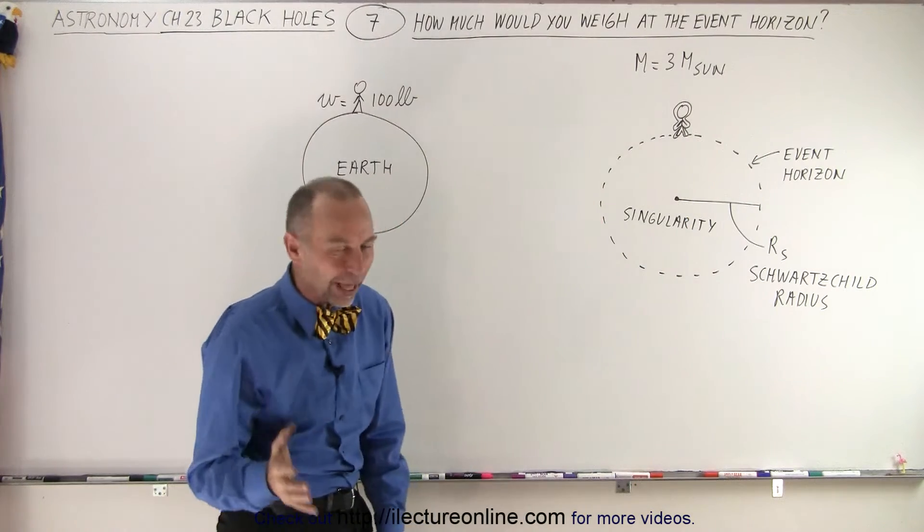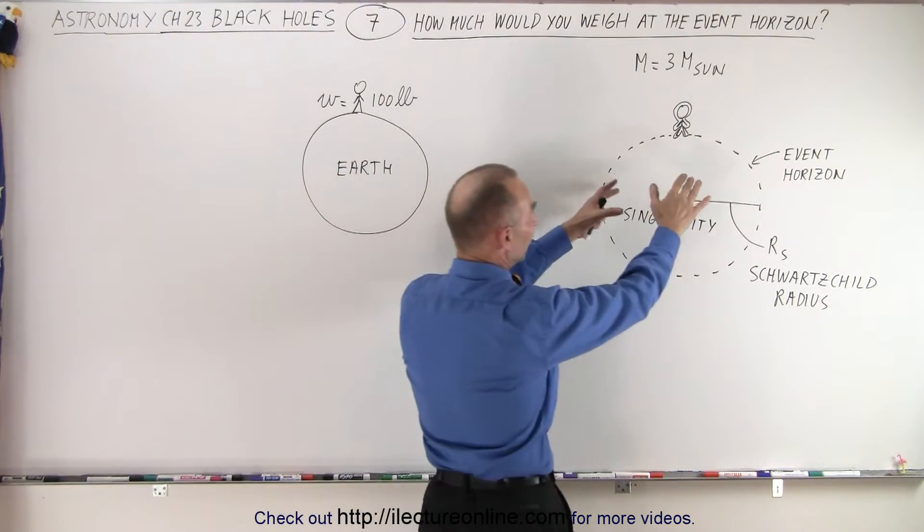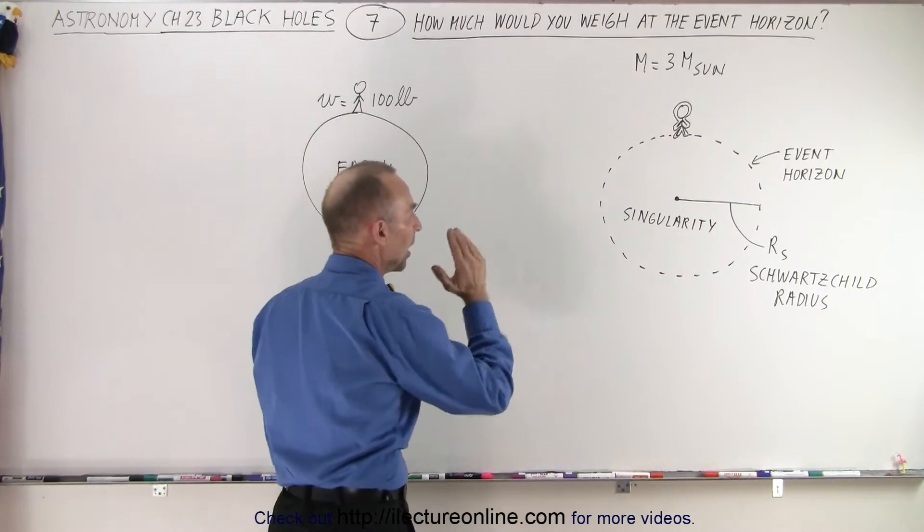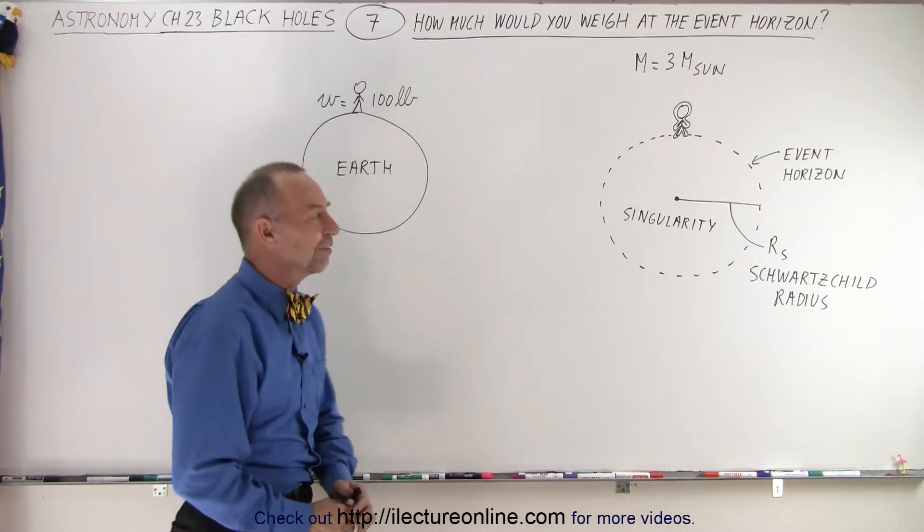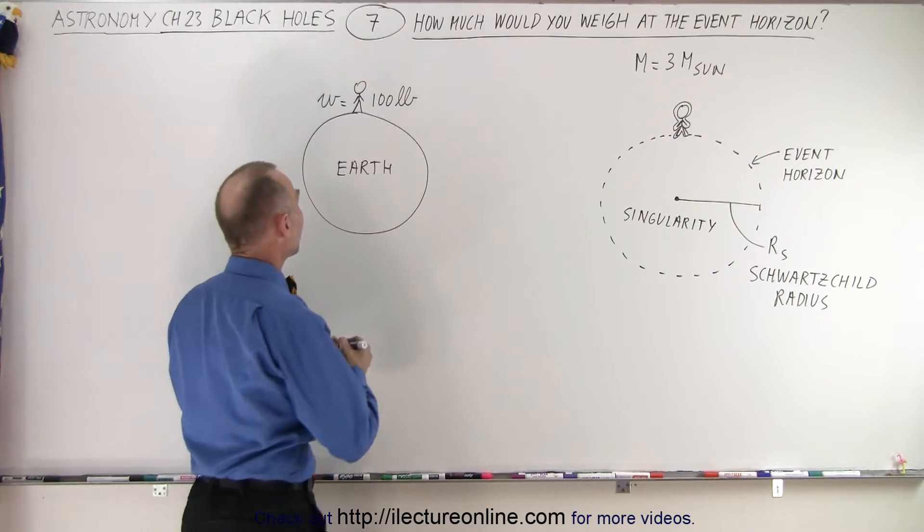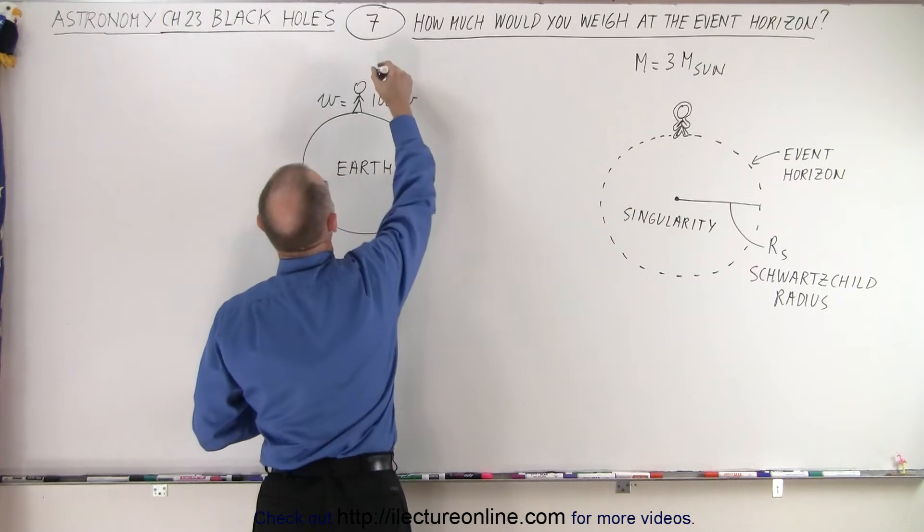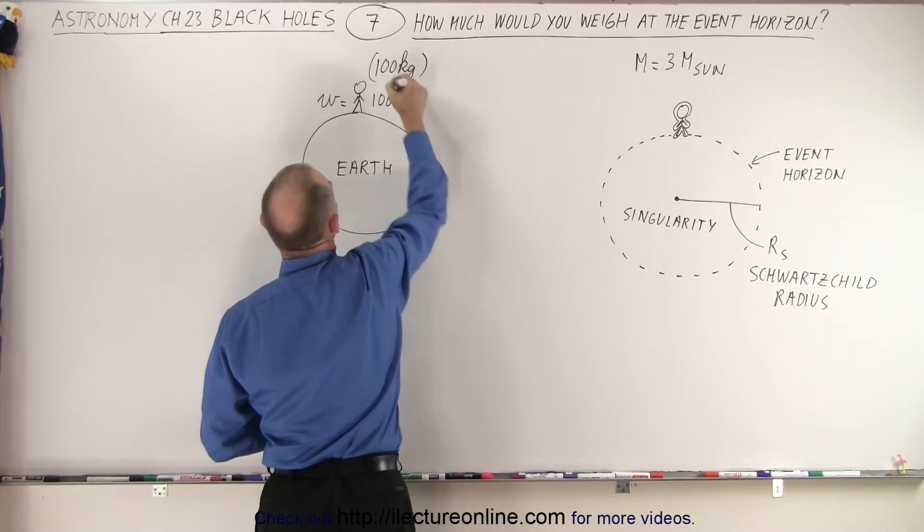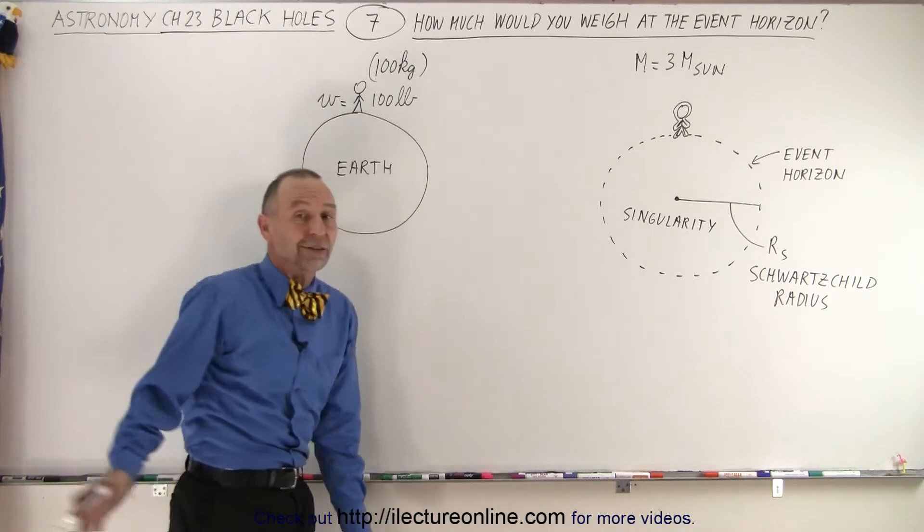Of course, I wouldn't know how to do that, but let's say that somebody built a platform and you could stand at the event horizon, and let's say on Earth you weigh 100 pounds, how much would you weigh at the event horizon? And for our friends who don't like pounds, let's say that you have a mass of 100 kilograms, what would be your apparent mass when you're at the event horizon?